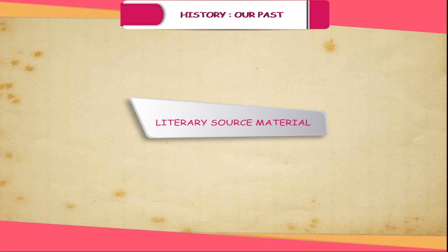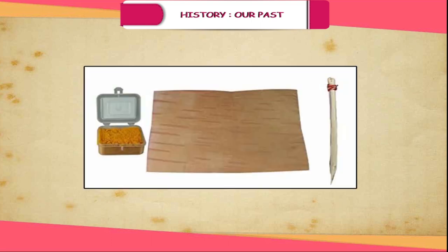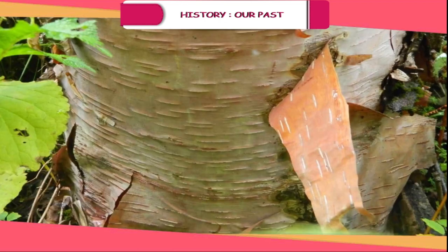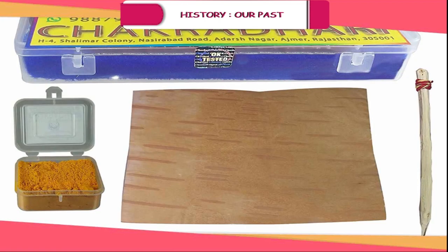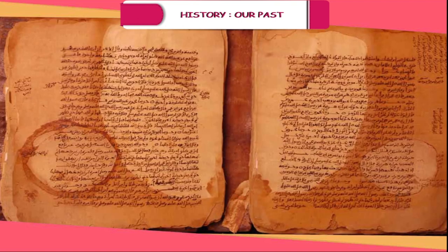Thousands of years ago, when there was no paper to write on, our ancestors wrote on dried bhoj patras, the bark of trees. As there was no printing press, accounts were written by hand. These handwritten accounts are called manuscripts. Literary sources include two kinds of literature: religious literature and secular literature.